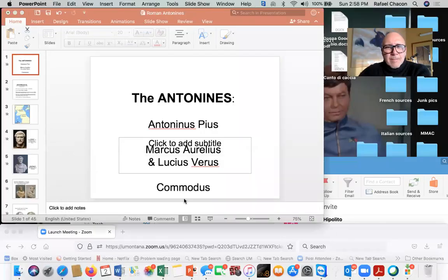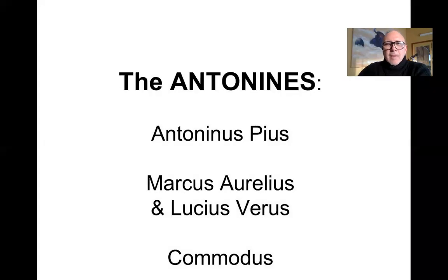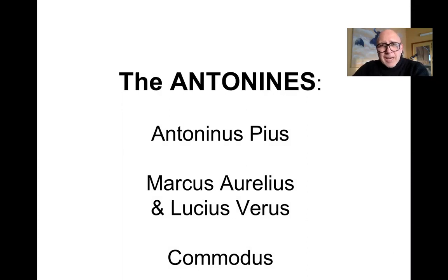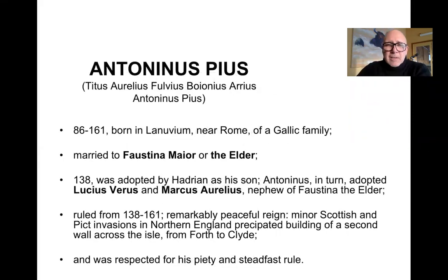Today we follow a very interesting dynasty known as the Antonines. So if you'll bear with me a second, I'll share the screen and we will begin our PowerPoint presentation on the Antonines. This is an interesting dynasty — they have four rulers: Antoninus Pius, Marcus Aurelius and Lucius Verus, and then a third emperor, Commodus. All were descendants of the Antonine family, and they were placed there by Hadrian, who was one of the few emperors able to directly select his successor. He selected Antoninus Pius, Marcus Aurelius, and Lucius Verus — all quite successful in their time. Let's begin with Antoninus Pius.